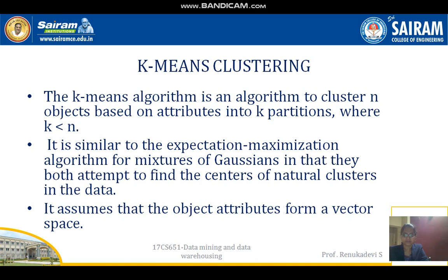In K-means clustering, each point is assigned to the closest cluster centroid. The centroid of each cluster is then updated based on the points assigned to it. Whether we want one cluster, two clusters, or up to N clusters, we consider the specified distance and location, and perform the cluster operation based on the updated points.